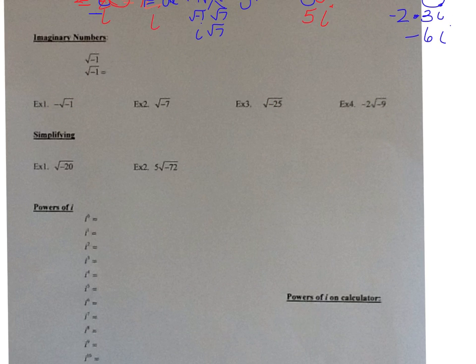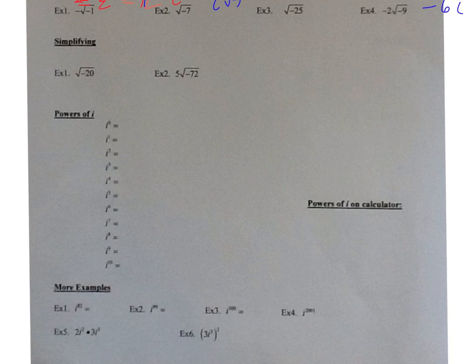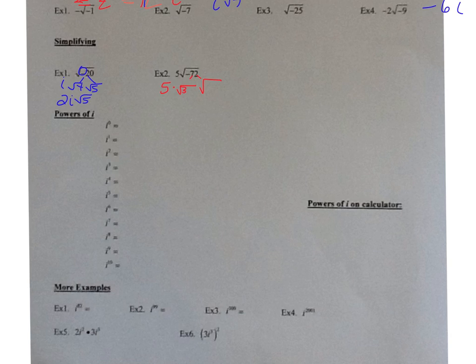Now let's talk about simplifying. Simplifying works the same way except now you have that negative. The negative becomes i, and then the square root of 20 is the square root of 4 times the square root of 5. The square root of 4 is 2, so it would be 2i√5. For 5 times the square root of negative 72: the square root of 72 is 36 times 2, the negative becomes i, so it's 5 times i times the square root of 36 is 6 times √2, which gives 30i√2.